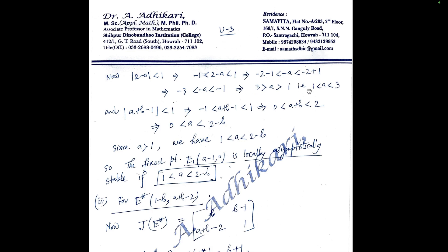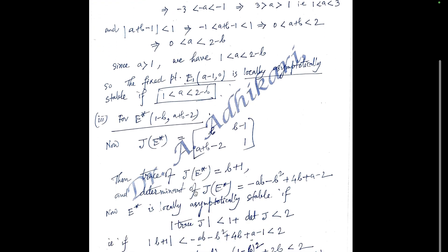From |2-a| < 1 we get 1 < a < 3. From |a+b-1| < 1 we get 0 < a < 2-b after simplification. Since it is given that a > 1, combining these conditions gives 1 < a < 2-b. Therefore E₁ is locally asymptotically stable if 1 < a < 2-b.